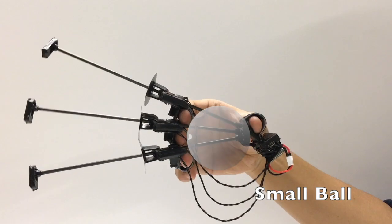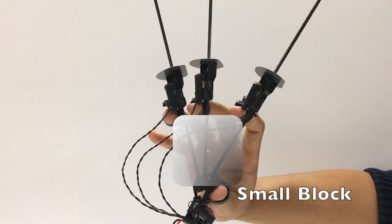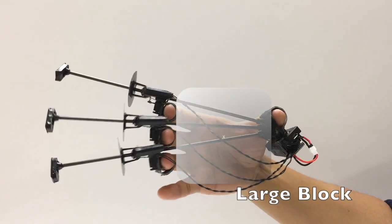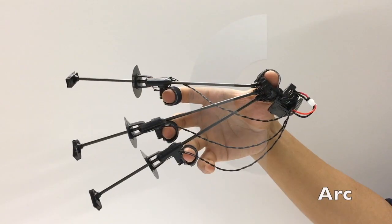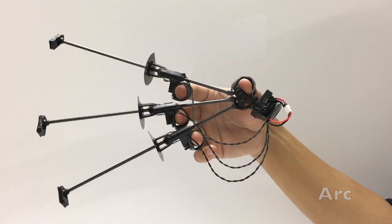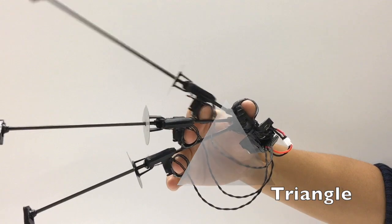The device uses brakes between the fingers and thumb to simulate the grasping of rigid objects. By controlling when the individual brakes activate, it is possible to render a variety of rigid object shapes and sizes.